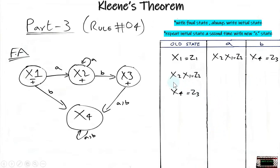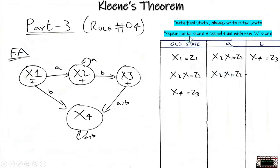Now coming to the second row, which is x2 and x1. When we are in x2 and get input a, it remains in x2. When we are in x1 and get input a, it goes to x2 — so we write x2 only once. The x1 is also here because x2 is a final state, so by the rule we must write the initial state x1.